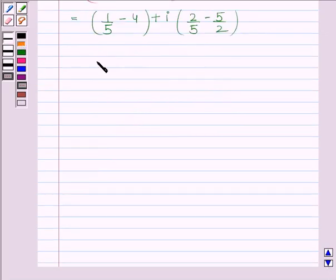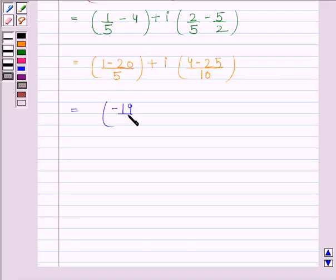And this is equal to (1 - 20)/5 + i(4 - 25)/10. And this is equal to -19/5 + i(-21/10).